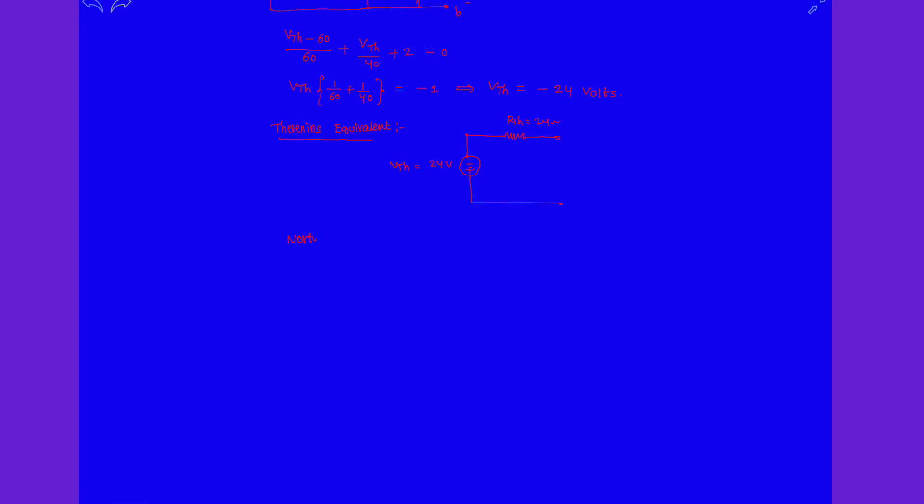Norton equivalent circuit: it is clear that I_norton or I_short circuit is nothing but V_th over R_th, which is minus 24 over 24. This is minus 1 amp. So clearly we can draw the circuit. This is 1 amp - you can read 1 amp because the current flowing direction is downwards.